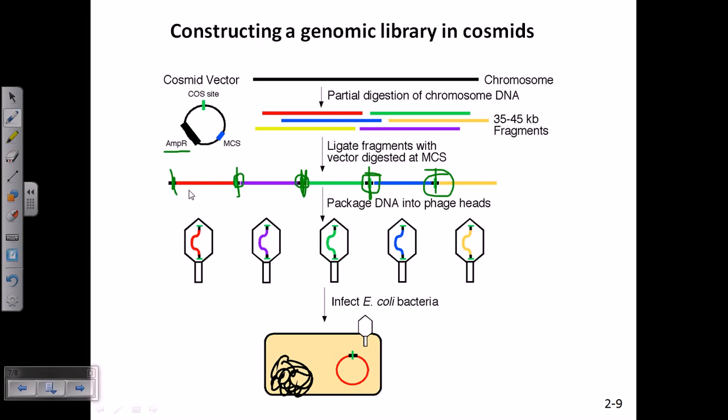So, after all this happens, what is going on? Packaging will be done from one cos site to another cos site and they will be packaged into the phage inside the phage cell. So then we get multiple phage having different segments of the gene of our interest.